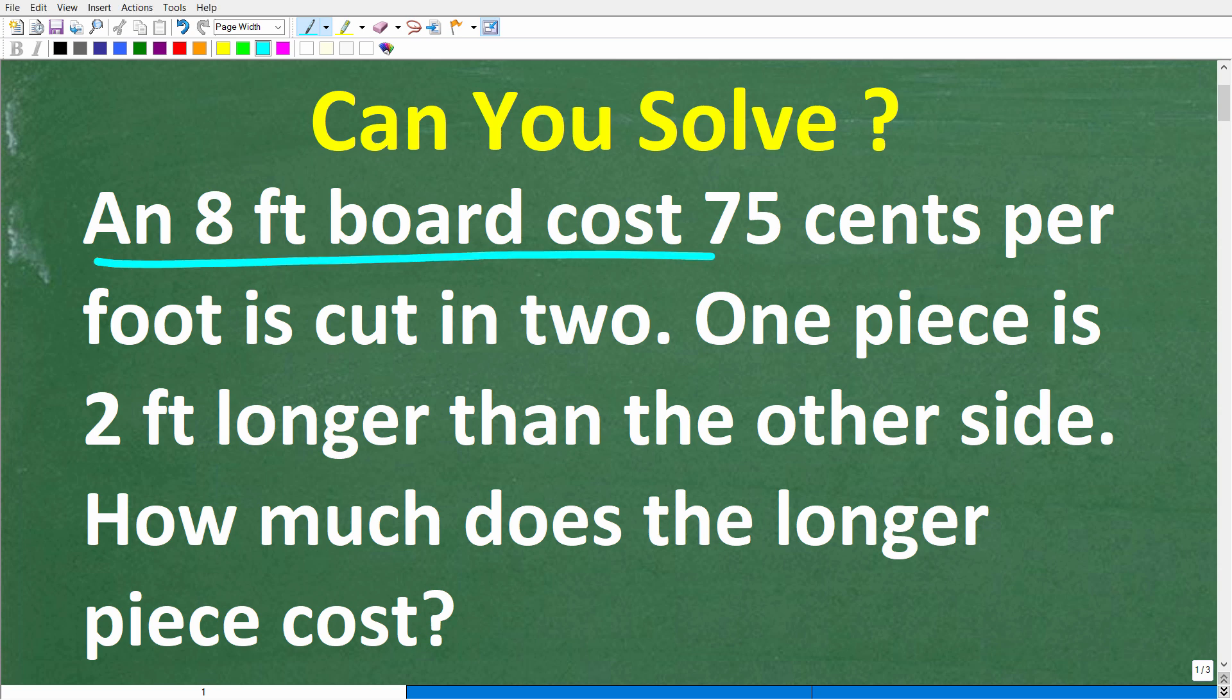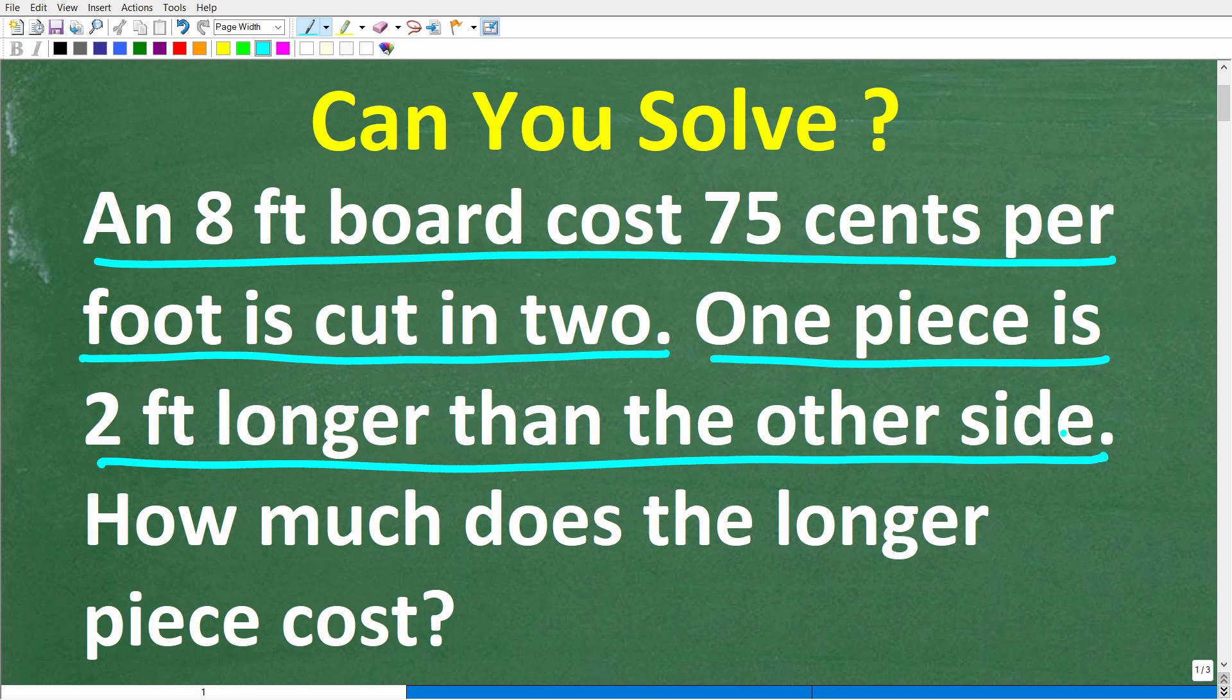An 8-foot board costs $0.75 per foot is cut into two pieces. One piece is two feet longer than the other side. How much does the longer piece cost?